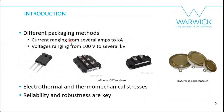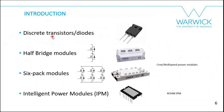There are different packaging methods because of different current and voltage ratings. Current ratings go from several amps to kilo-amps — from a discrete TO-247 to a press-pack capsule of several thousand amps. Voltages range from 100 volts or less to several kilovolts. If you want to operate at five, six, seven, or eight thousand volts you have to maintain clearance and creepage distances. Devices are subjected to electrothermal and thermomechanical stresses, so reliability and robustness are key.